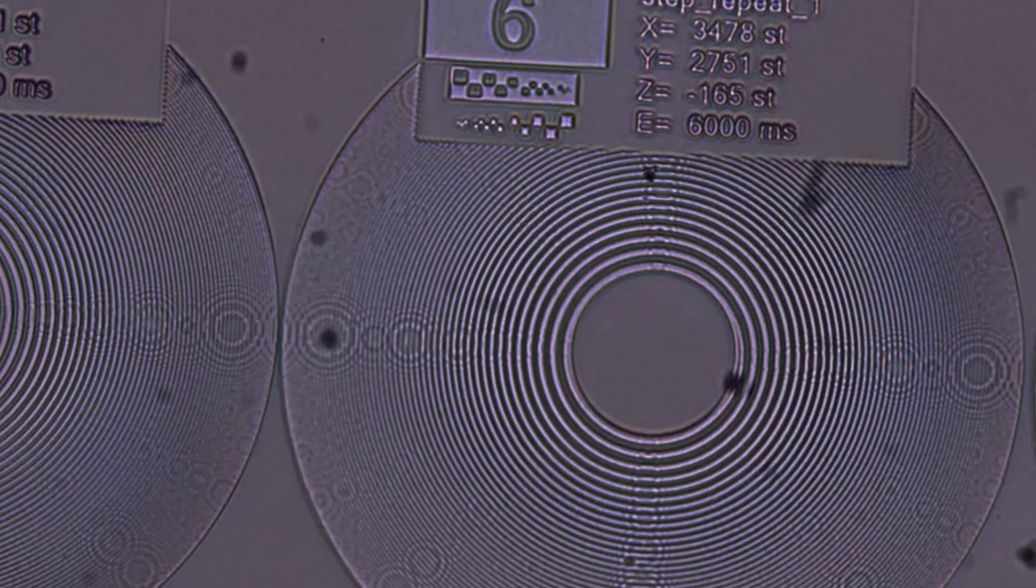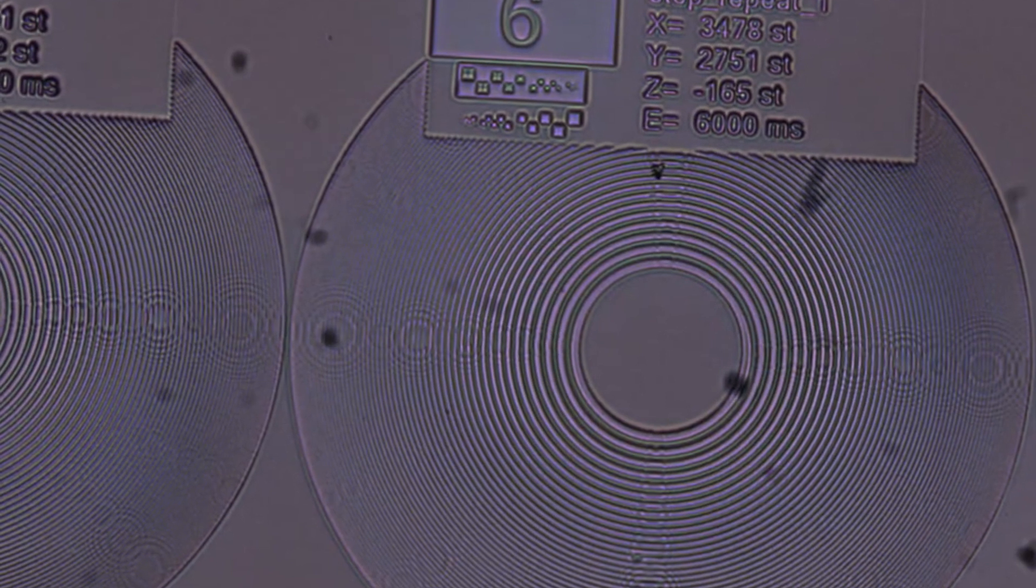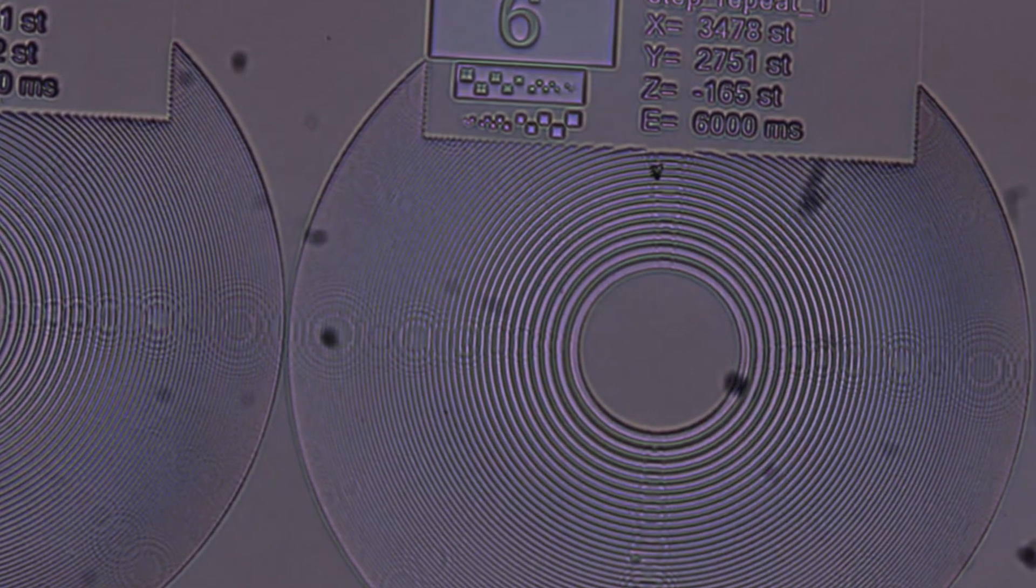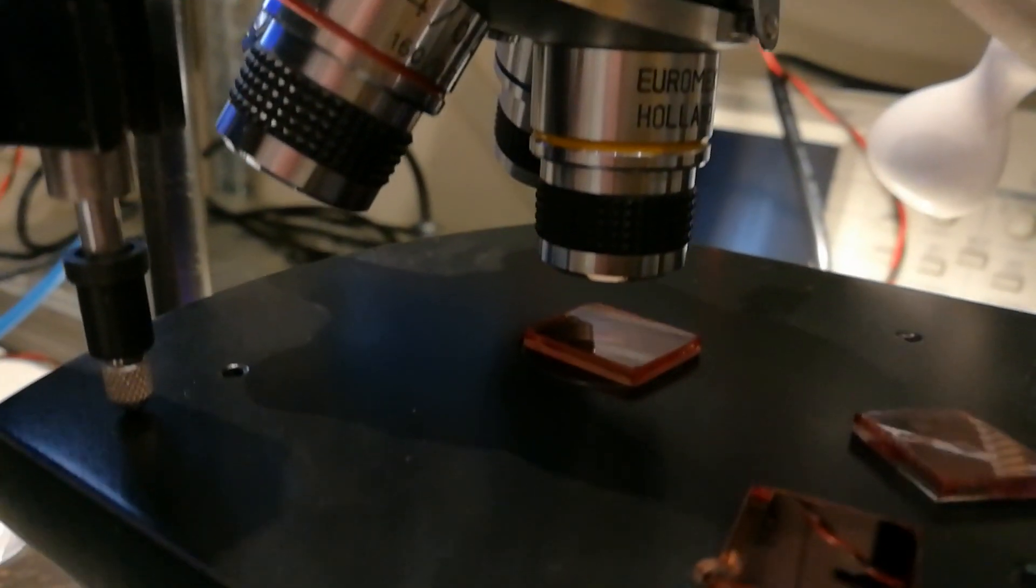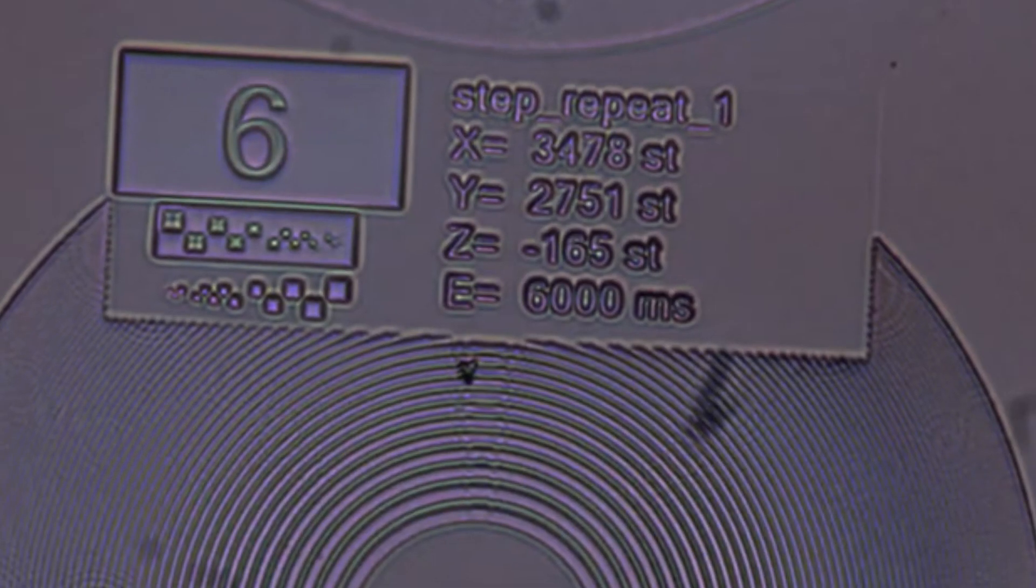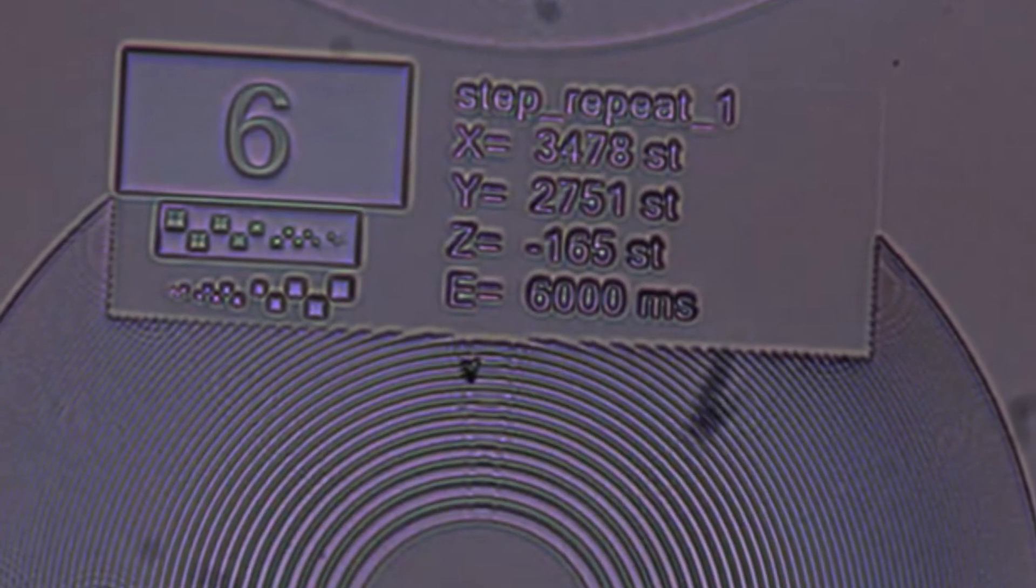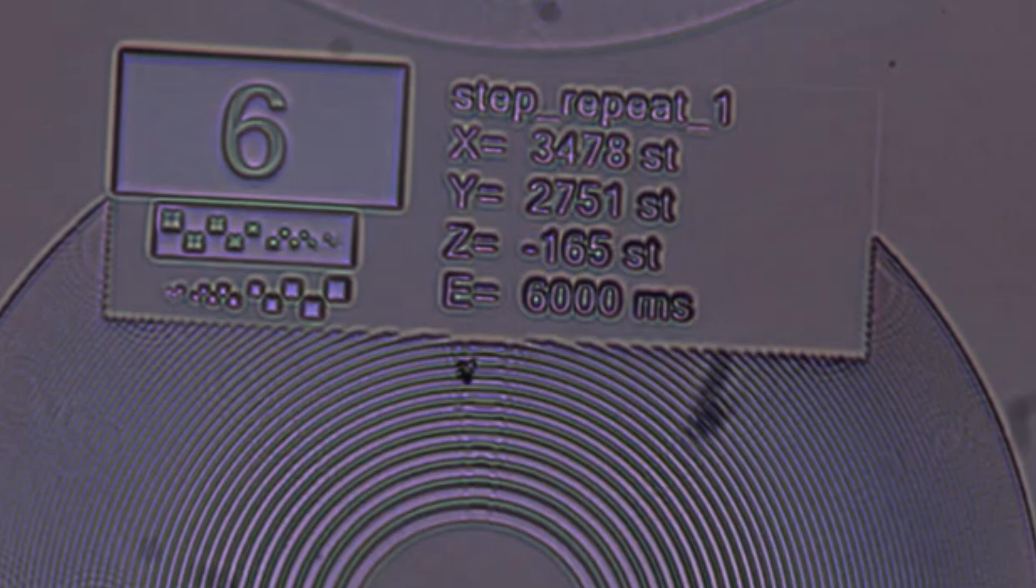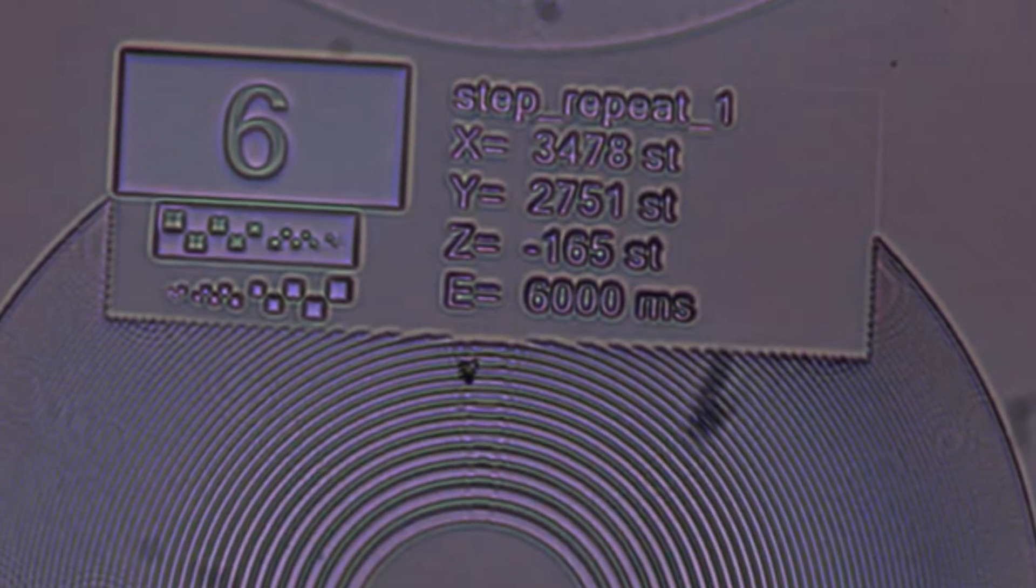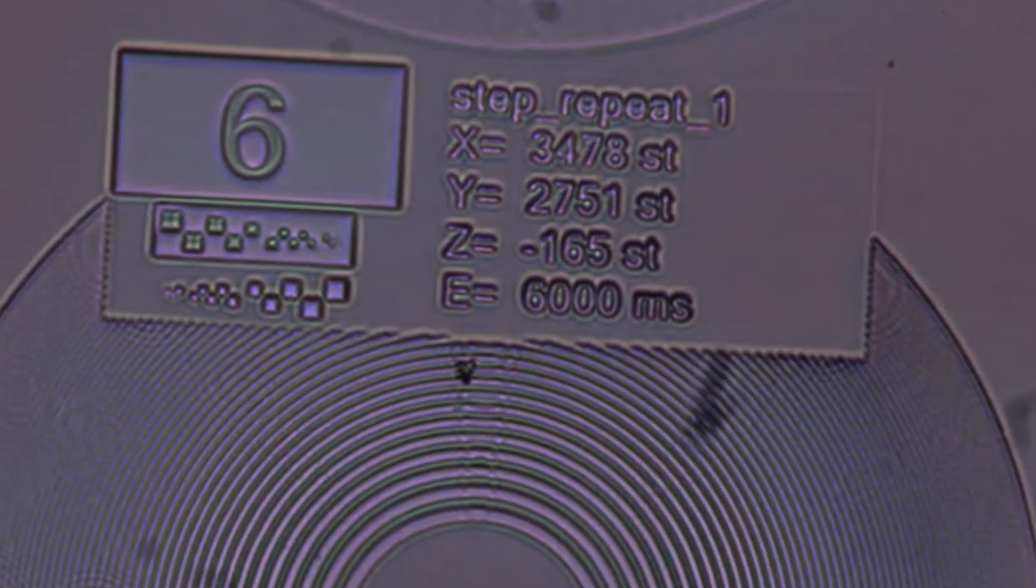The lenses are very small and they have a surface area of approximately 1 sixth of a square millimeter. So, you have to put them under a microscope in order to look at the details. By the way, the text in the image, which covers about 1 fifth of the lens, is there so I can easily match each lens pattern with a specific set of exposure parameters after development of the patterns.